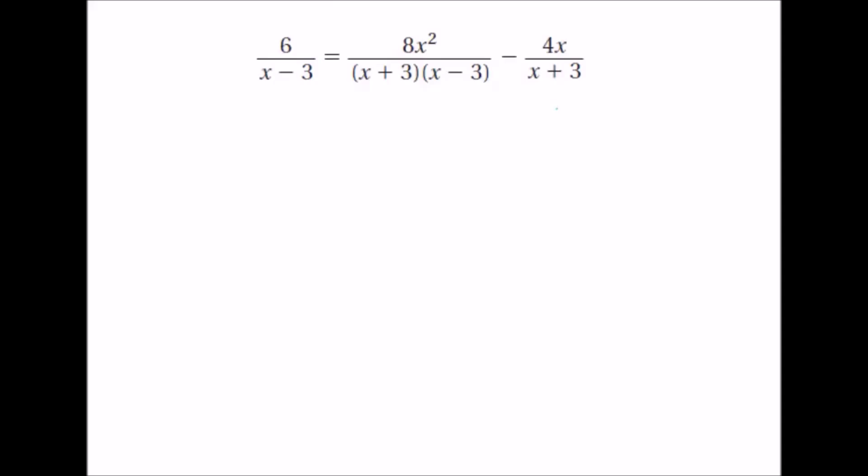So in doing this, you're really asking yourself, what is it going to be? Like, this one only has x minus 3. This one has x plus 3 and x minus 3. This one just has x plus 3. So this one in the middle, it actually has everything we need. The one on the left only has x minus 3. The one on the right only has x plus 3. But we need them all to be x plus 3, x minus 3, because that contains everything. So what we're going to do is multiply everything by that lowest common denominator, by this, x plus 3, x minus 3.